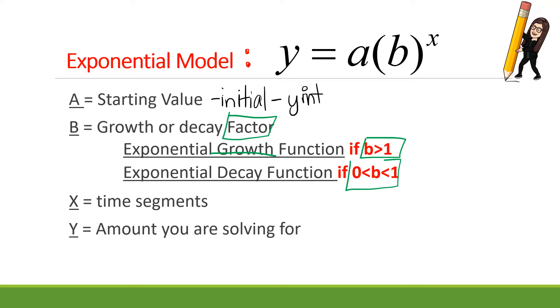If your b value is between 0 and 1, not 0 or 1 but in between, then you're dealing with exponential decay. So if I have a b value of 1 half or 3 fourths or 1 tenth.